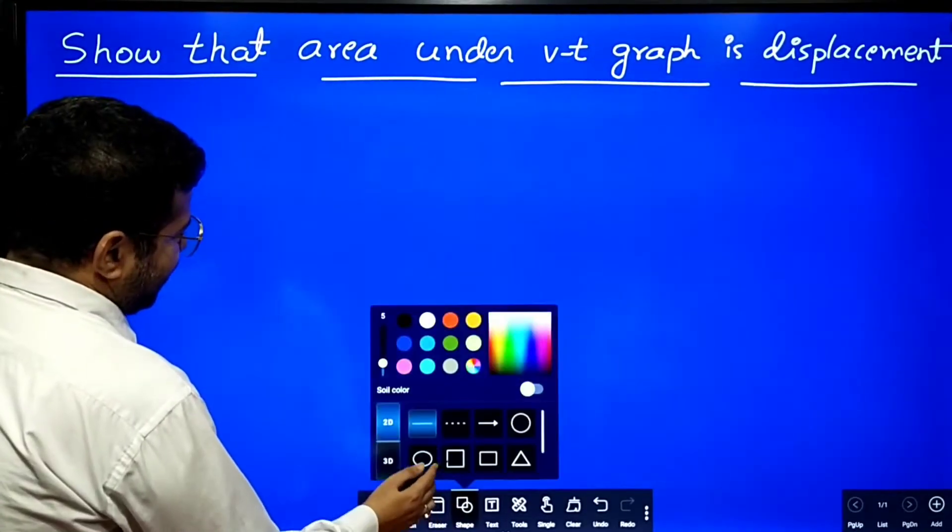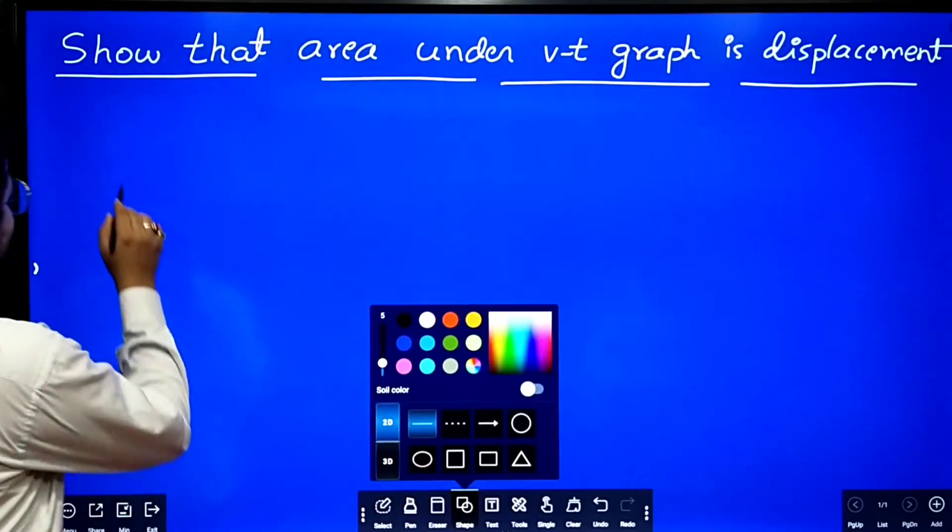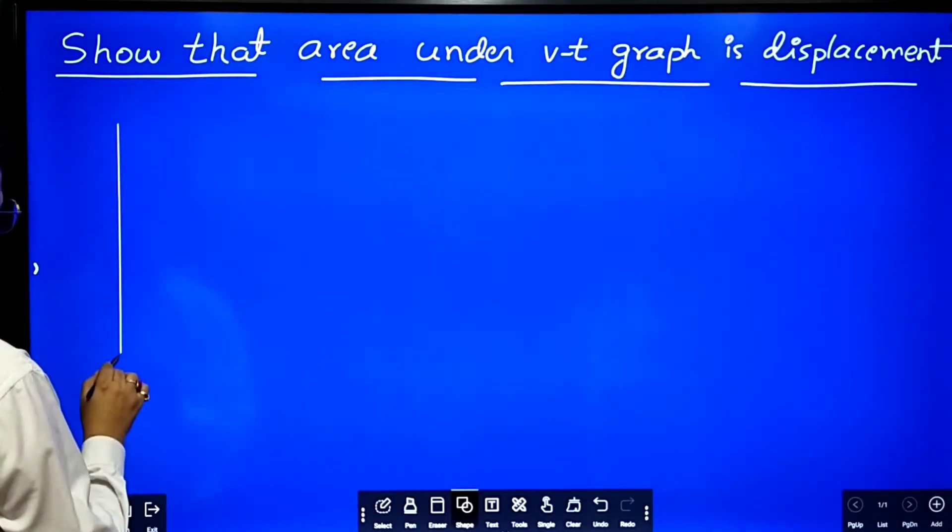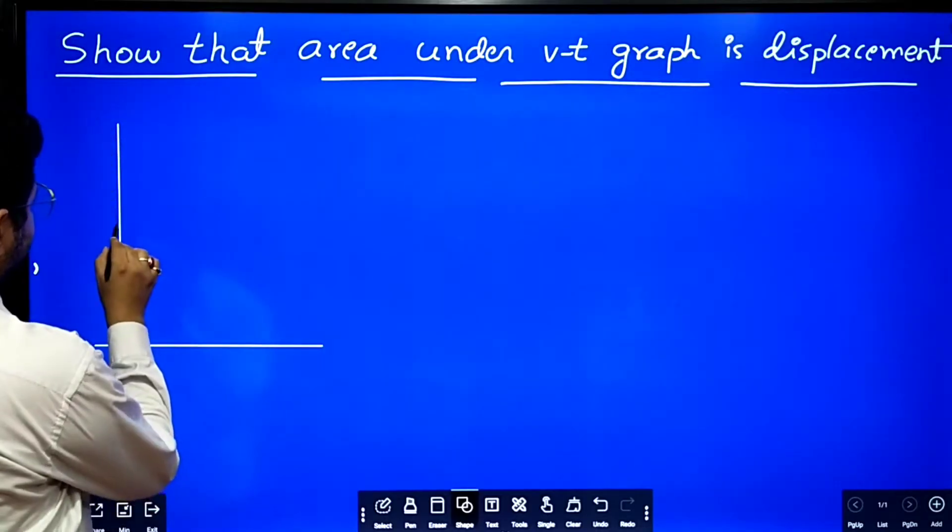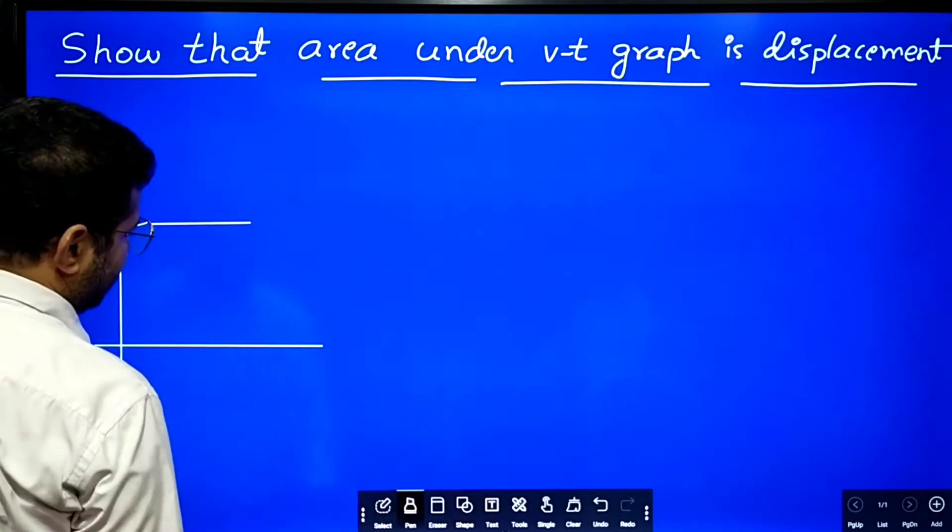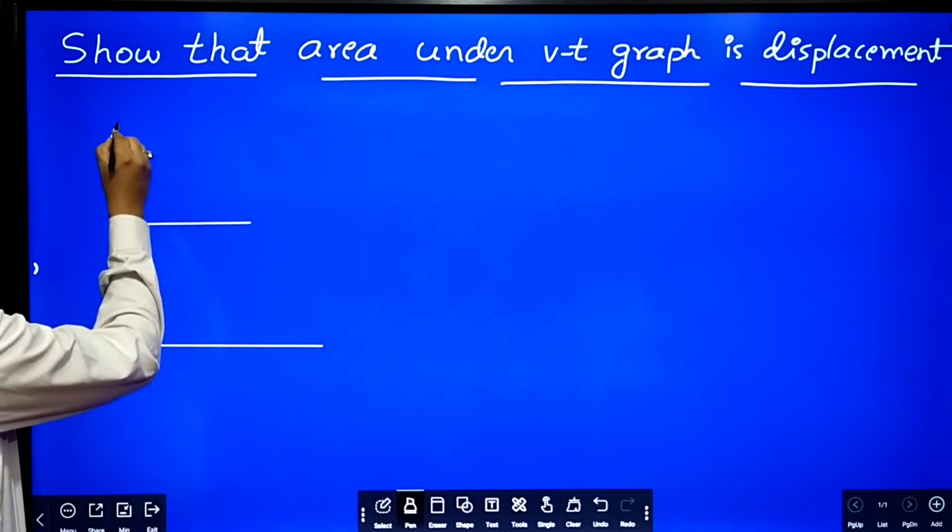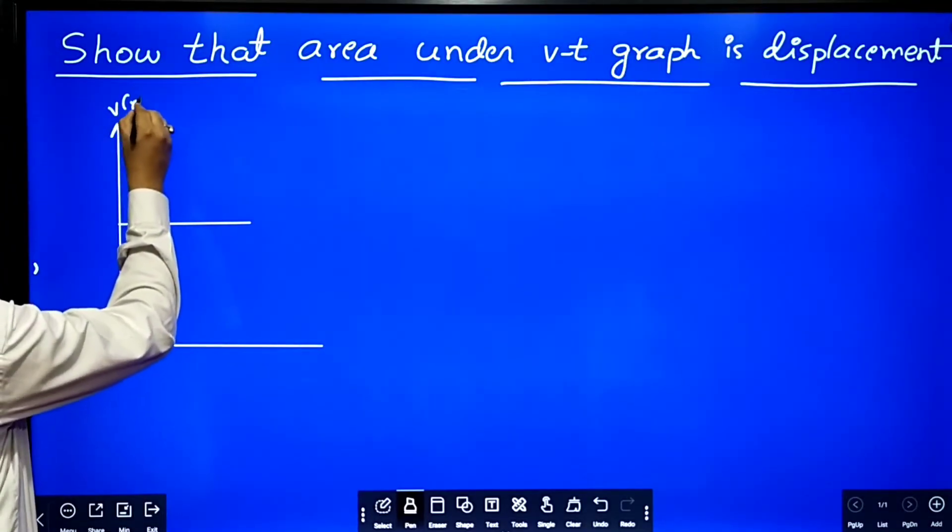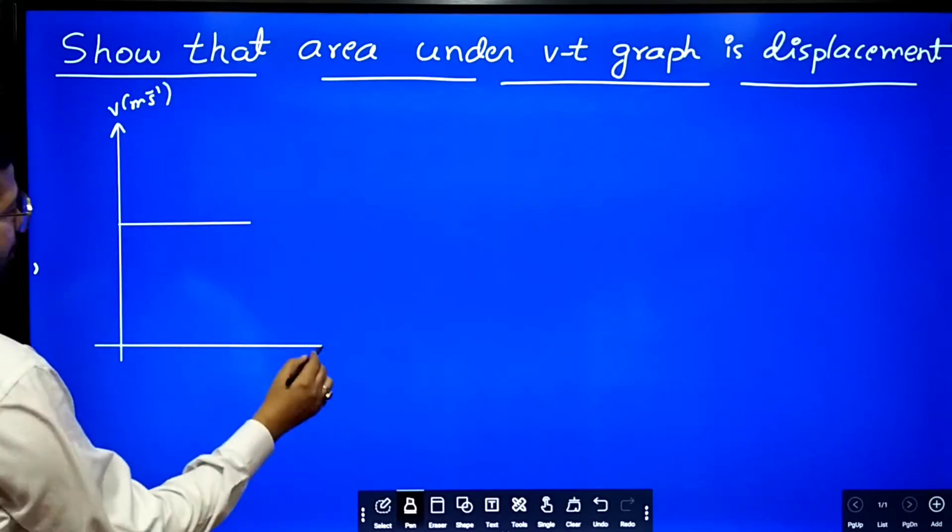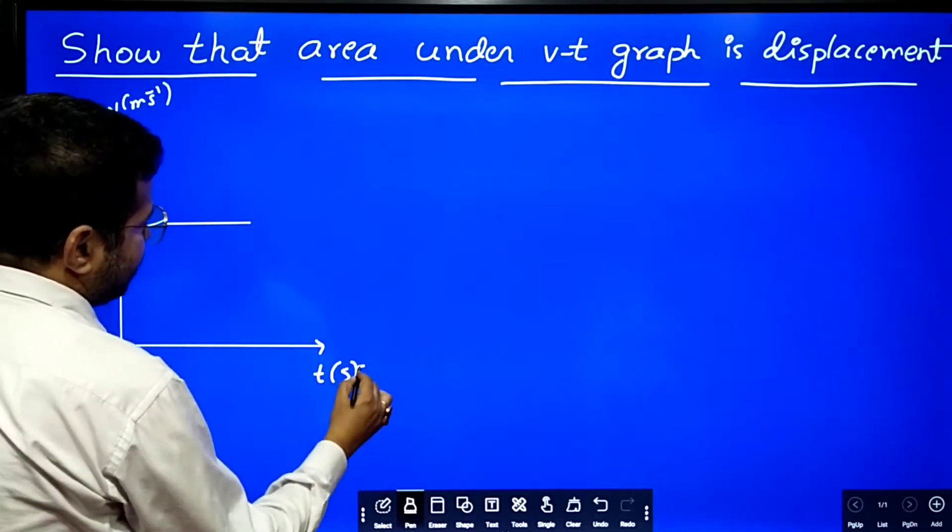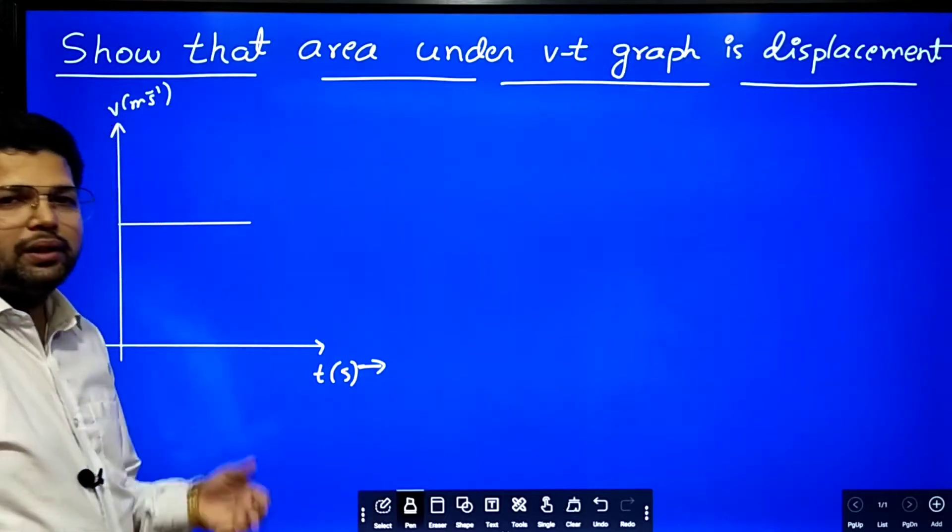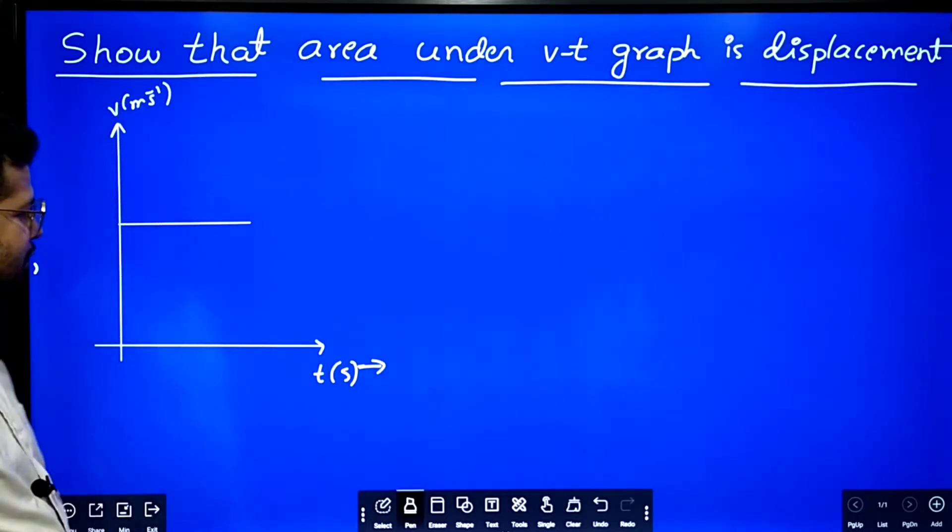First what we will do? We will draw a velocity time graph. So what is velocity time graph? If you plot velocity along y axis and time along x axis, it is as if you are representing velocity as a function of time, then we call it as velocity time graph.